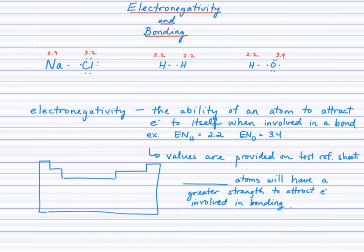On our test reference sheet you will find atomic number, average atomic masses, and also electronegativity values. These reference values will be provided to you during quizzes and tests. For example, the electronegativity of sodium is 0.9, chlorine is 3.2, hydrogen is 2.2, and oxygen is 3.4.